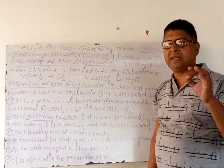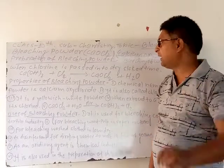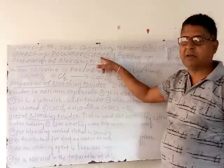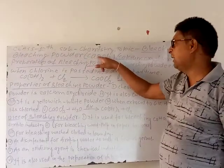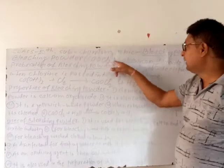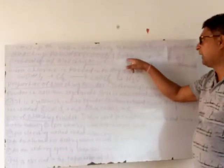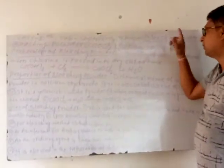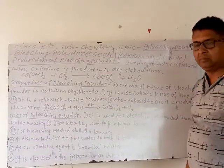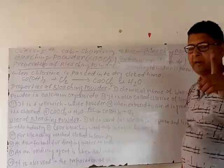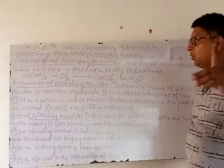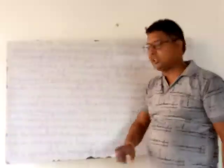Our topic is Bleaching Powder. The chemical formula of Bleaching Powder is CaOCl2. The chemical name of Bleaching Powder is Calcium Oxychloride.